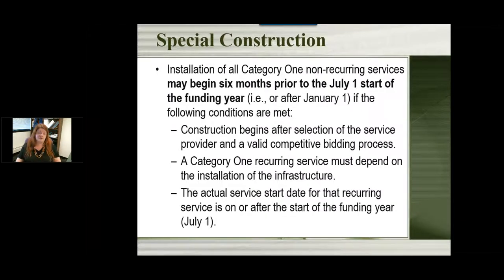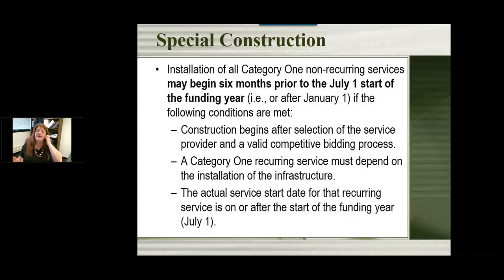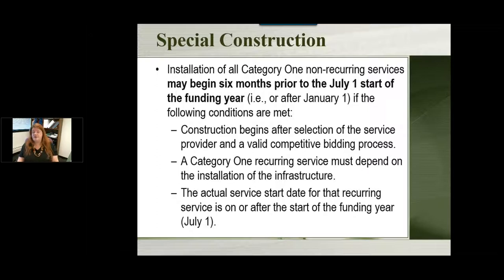Related to special construction, USAC knows that construction companies don't always work on the E-Rate funding year of July 1st to June 30th. They say that anything you need to do can be done up to six months prior to the start of the funding year — anything after January 1st. For example, if you're applying for the 2018 funding year starting in July, you can work with your provider to have construction done at any time during 2018, as long as you follow through and get that service when July 1st arrives.